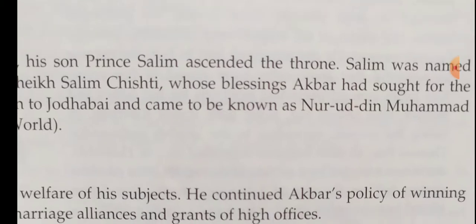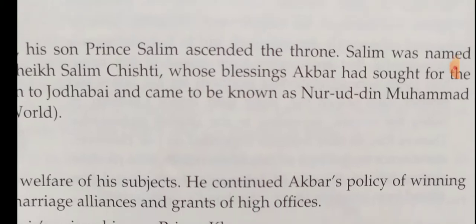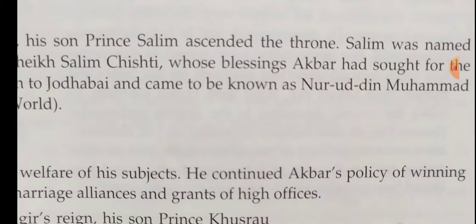In 1613, Jahangir defeated Rana Amar Singh, son of Rana Pratap. In 1620, he captured Kangra. Jahangir also established his control over Bengal and Awadh. Ahmadnagar was annexed in 1616.